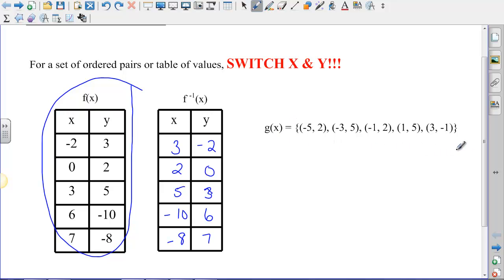Same thing can happen if I just have a list of ordered pairs. For example, I have g(x) equals {(-5, 2), (-3, 5), (-1, 2), (1, 5), (3, -1)}. I can write that g inverse of x is equal to, and we'll just take these ordered pairs and switch x and y: (2, -5), (5, -3), (2, -1), (5, 1), and (-1, 3). So there's our set of ordered pairs, and this set of ordered pairs is what is used to find g inverse.